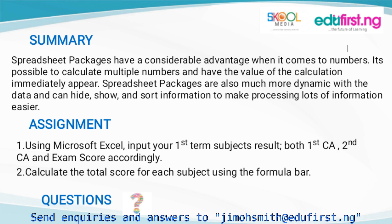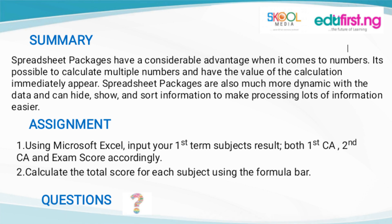I'll give you an assignment. It's very simple. Using Microsoft Excel, input your first term subjects — both your first CA, second CA, and your exam scores. Make sure you input it accordingly, then calculate the total score of each subject. If you can do this in time, you'll get to know more about Microsoft Excel spreadsheet. I'll be expecting your questions.